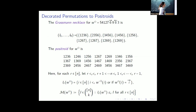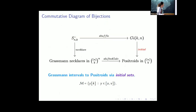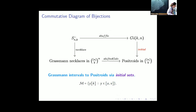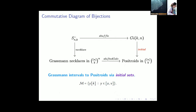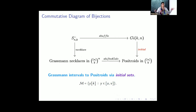Classically, we get the positroid from the decorated permutation by going through the Grassmann necklace. We needed a close connection between positroids and the Grassmann intervals. This was known by some experts — Lauren Williams and Allen Knutson — but doesn't appear in the literature. The positroid is easy to get from the Bruhat interval: for every element in the interval, take the first k letters in one-line notation as a set.